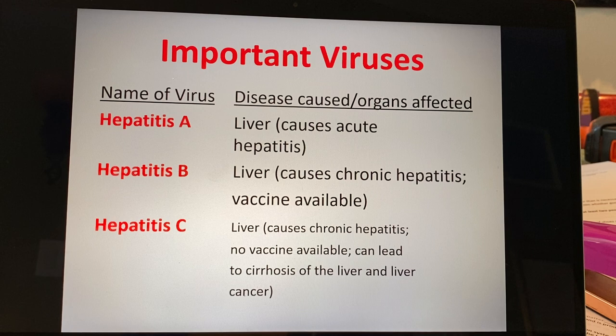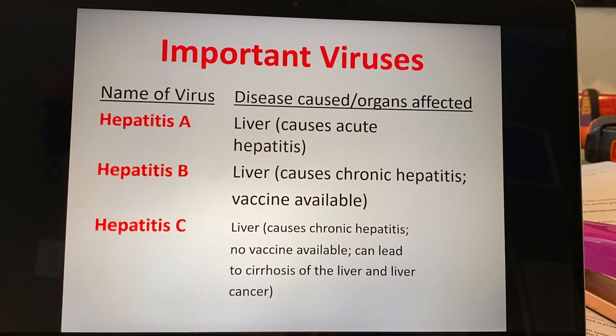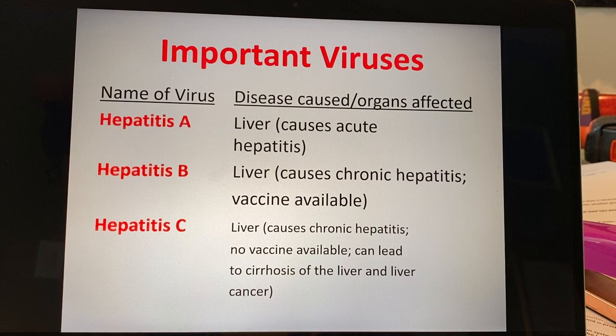I'm going to put those numbers in the notes — nothing you need to memorize for a quiz or exam. It's just interesting to see how tiny viruses are in terms of their nucleic acid, and what allows them to mutate so quickly. It's also a problem because because they mutate so quickly, you can develop a vaccine that works for a particular strain, but then the virus mutates and perhaps that vaccine no longer works because the virus has actually changed.